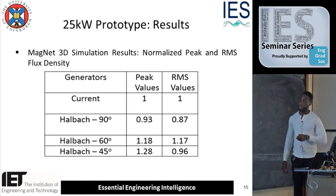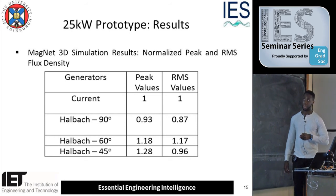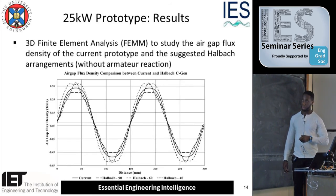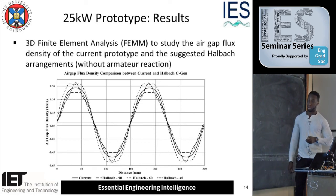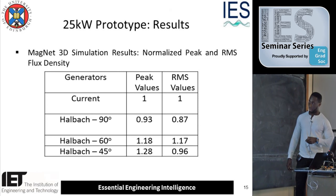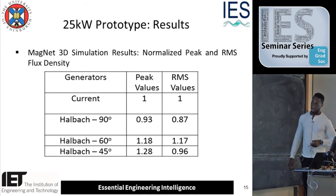The values shown here are all normalized to the current machine. I looked at the peak and the RMS flux density, because looking at the previous graph alone you cannot exactly tell — the most important factor in all these waveforms is the fundamental, because the fundamental generates the power. You may have a very high peak, but the actual fundamental could be low compared to other waveforms. Looking at the actual RMS values, the 45-degree case had a higher peak, but in terms of its contribution or increase in flux density compared to the current machine it's slightly lower, whereas the 60-degree case is quite high.